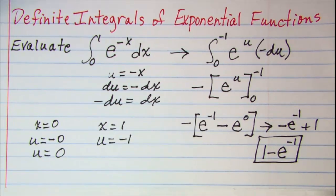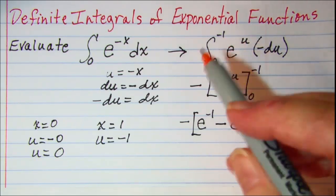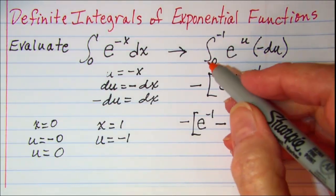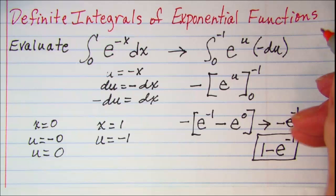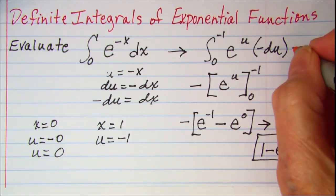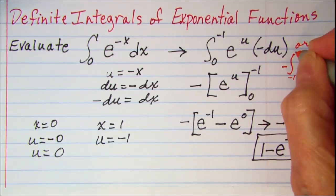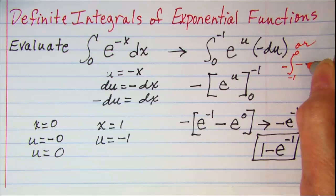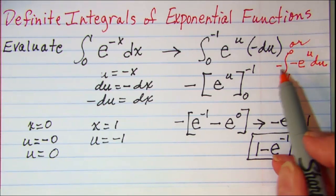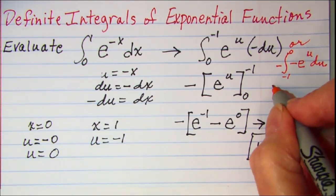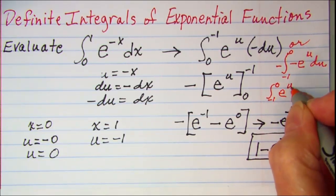Now if it bothers anyone that the lower limit of integration is bigger than the upper limit, we know that we can turn these around by just putting a negative out in front. So this could be a negative integral from negative 1 to 0 of negative e to the u du. These minuses would cancel out, and I would be doing an integral from negative 1 to 0 of e to the u du.